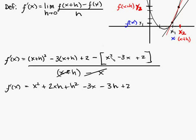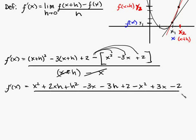And then here's where a lot of people make a mistake. They just write minus x squared minus 3x plus 2. No, it's minus the function itself. So you have to distribute the minus sign here, here, and here. So you're going to get minus x squared plus 3x minus 2. And this is all over h.